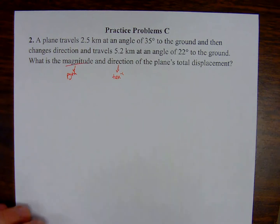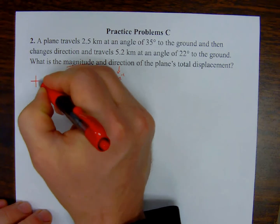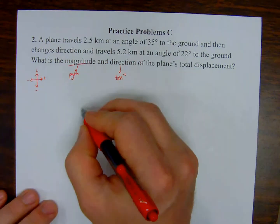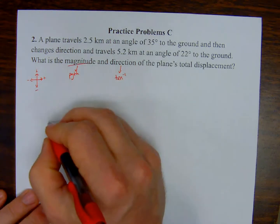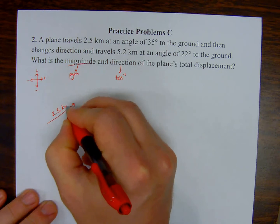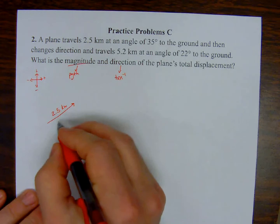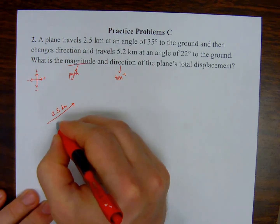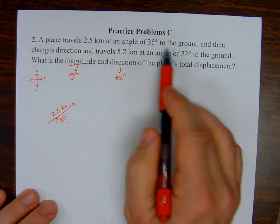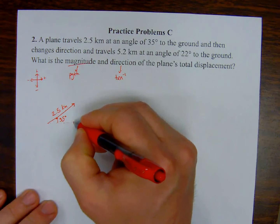So let's draw this up first. I'm going to establish my coordinate system — plus, plus, minus, minus. My first movement is 2.5 kilometers at an angle of 35 degrees to the ground. Here's the ground; it's going to be going up about 35 degrees. I have two angles; I'm talking about this first one — 35 degrees relative to the ground. Here's my first triangle that I will decompose into its components.